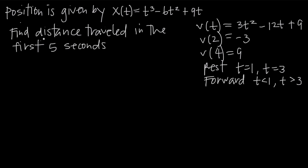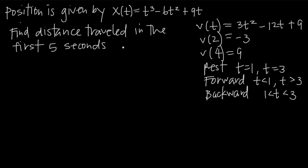The next part asks us to find the total distance traveled by the particle in the first 5 seconds, between t equals 0 and t equals 5. The particle moves forward when t is less than 1 and when t is greater than 3, it's at rest at t equals 1 and t equals 3, and it moves backward between t equals 1 and t equals 3. We have to take direction into account when finding total distance.